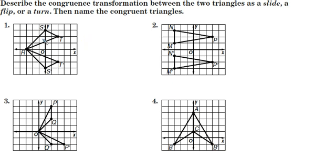For number one, as you can see here, R, S, T, it was just flipped to make R, S prime, T prime. That's what we call the little notches there for the S prime and T prime. So that was a flip.